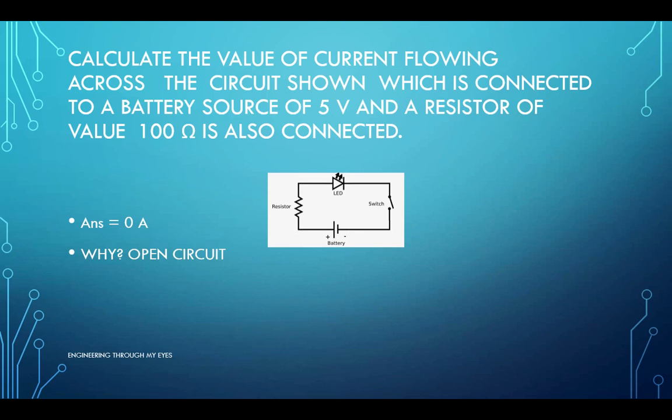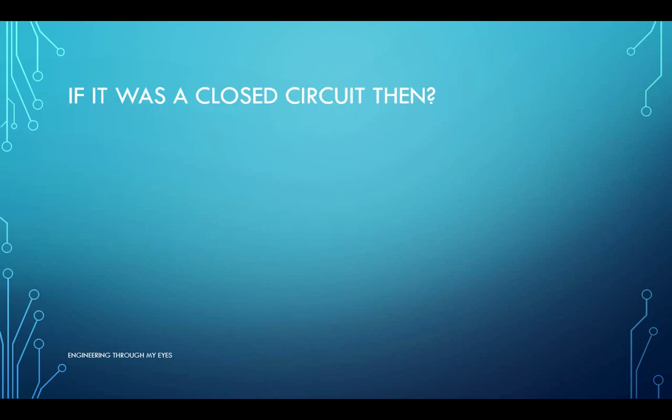But what if the circuit was closed? How would you have calculated the values here? It is in this case that we use the Ohm's law triangle or the Ohm's law as such. For such an example, what we will be doing is we will be dividing the value of voltage with resistance to find the total value of current, which here comes out to be 0.05 amperes. It was not as difficult as you might have thought it would have been.